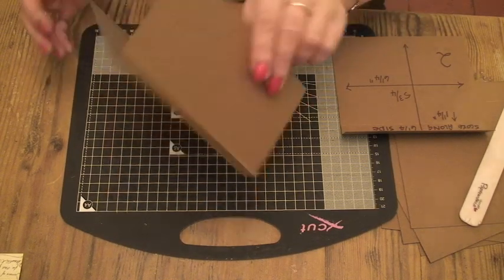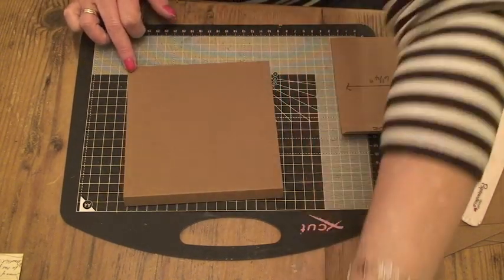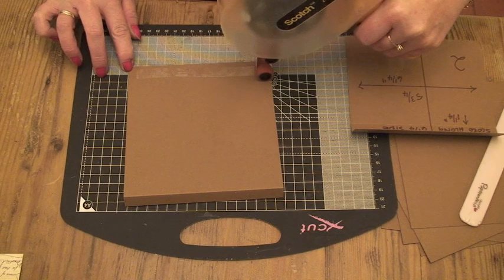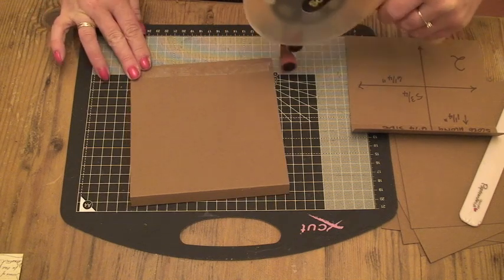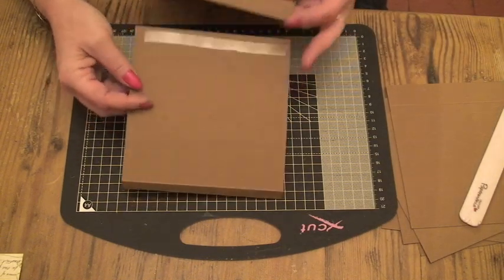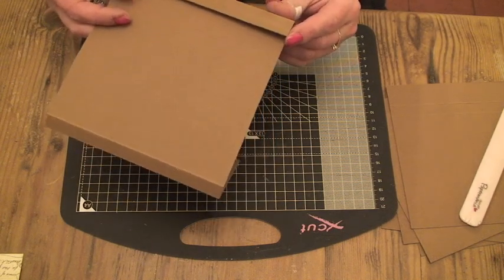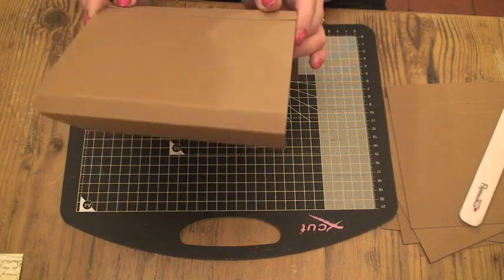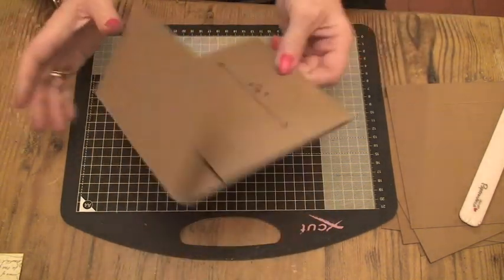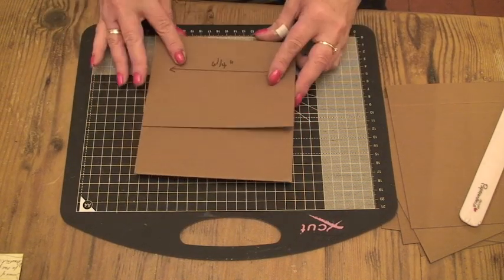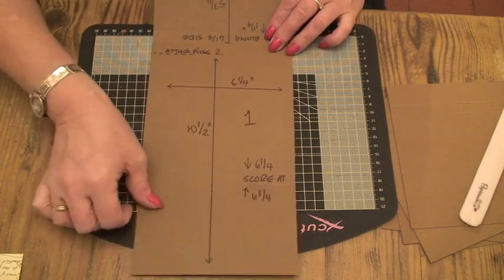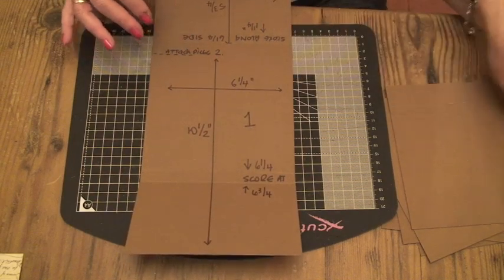Piece number one I'm going to turn it over and stick along the unscored side. I'm just going to use my tape and then I'm going to put the fold over flap on the back of this piece. So that gives you your front cover.